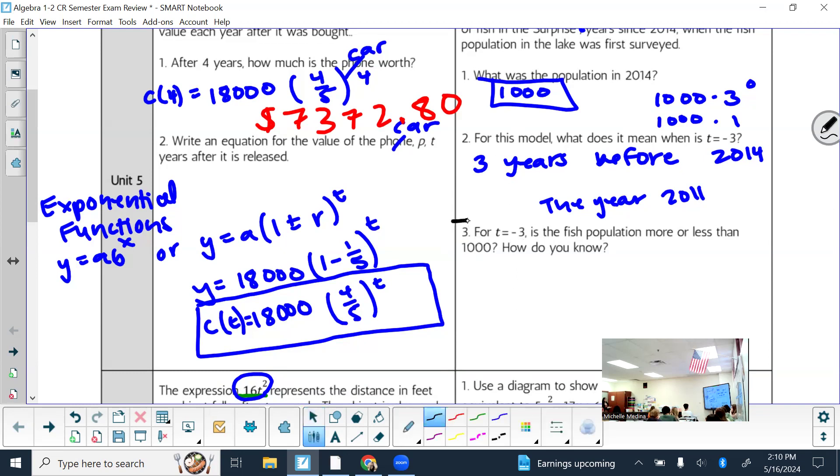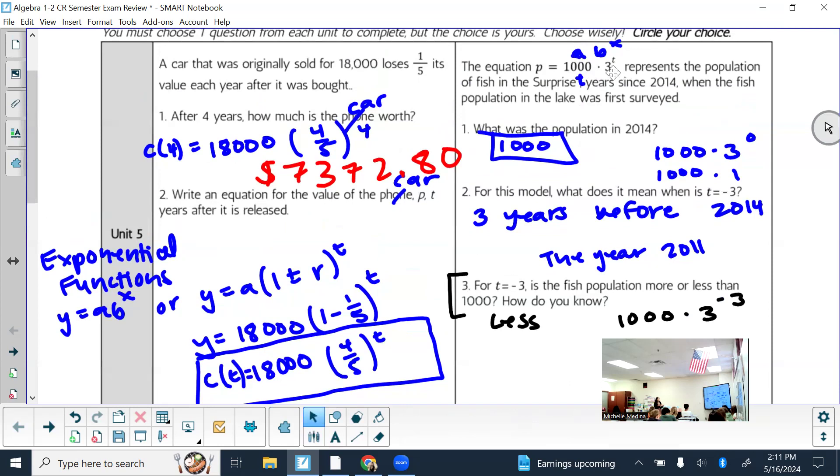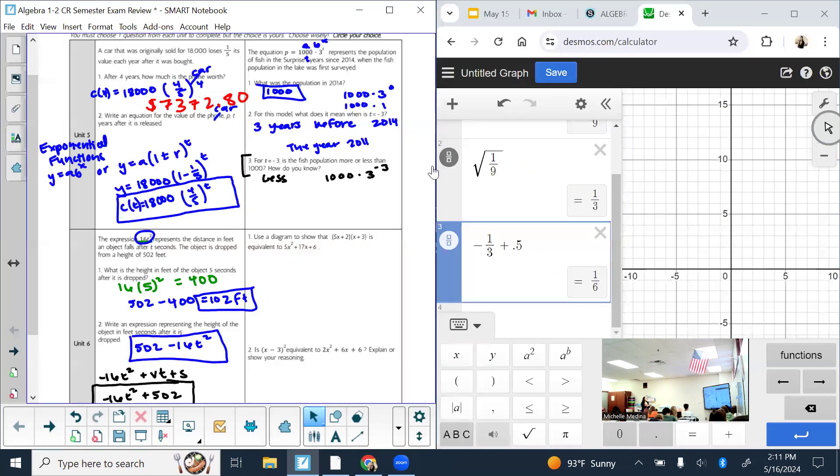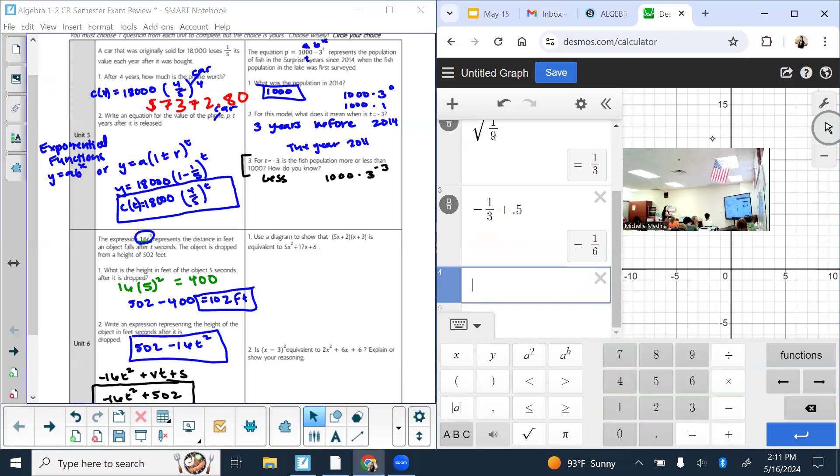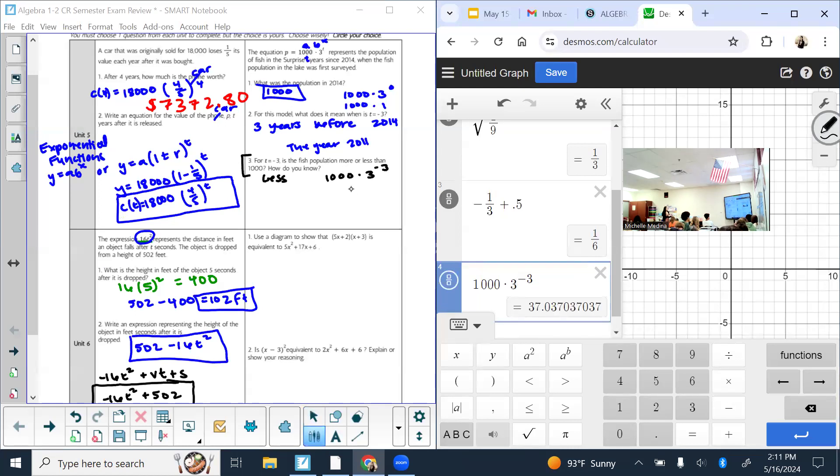Now for T equals negative 3, is the fish population more or less than 1,000? Please attempt to all of them. Even if you don't know what you're doing, more or less? Is it more or less? And how do you know? Okay, that's a good option to do. It gave you the equation. Why not just plug it in and see what it gives you? But also, was this increasing over time or decreasing over time? Yeah, it said it was growing. Or maybe it didn't say it, but you can tell because it's multiplying by 3 each time that it would be growing as time goes on. If we're talking about before we started measuring, then it's expected to be less. But when in doubt, type it into your calculator. And it's about 37. Show the math that it's truly less than 1,000.